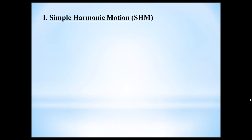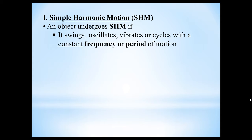Let's start off with simple harmonic motion — we'll use the acronym SHM to abbreviate that. In order for an object to undergo simple harmonic motion it needs to meet the following two criteria. One, it must swing, oscillate, vibrate, or cycle with a constant frequency or period of motion.